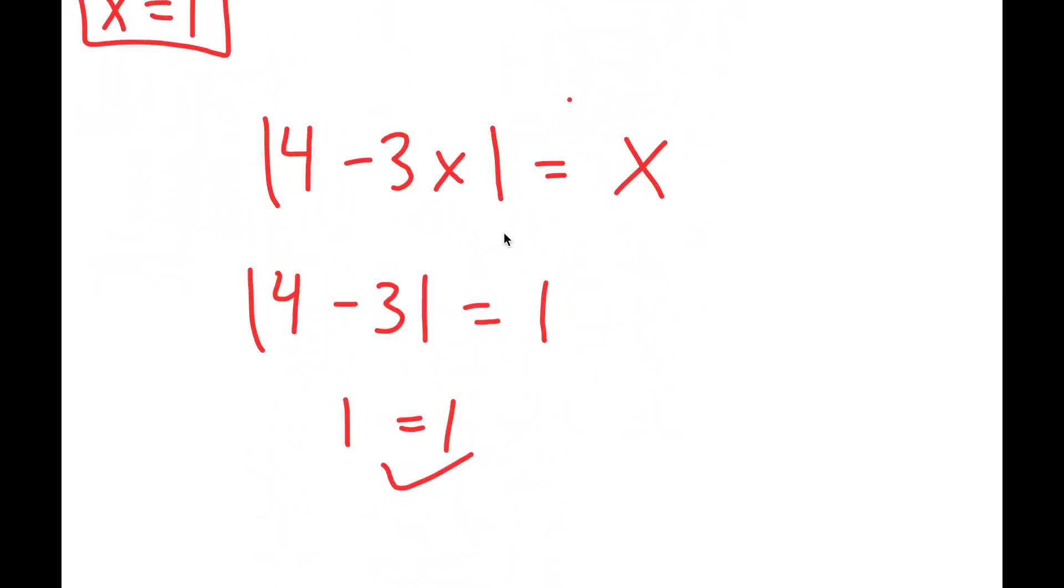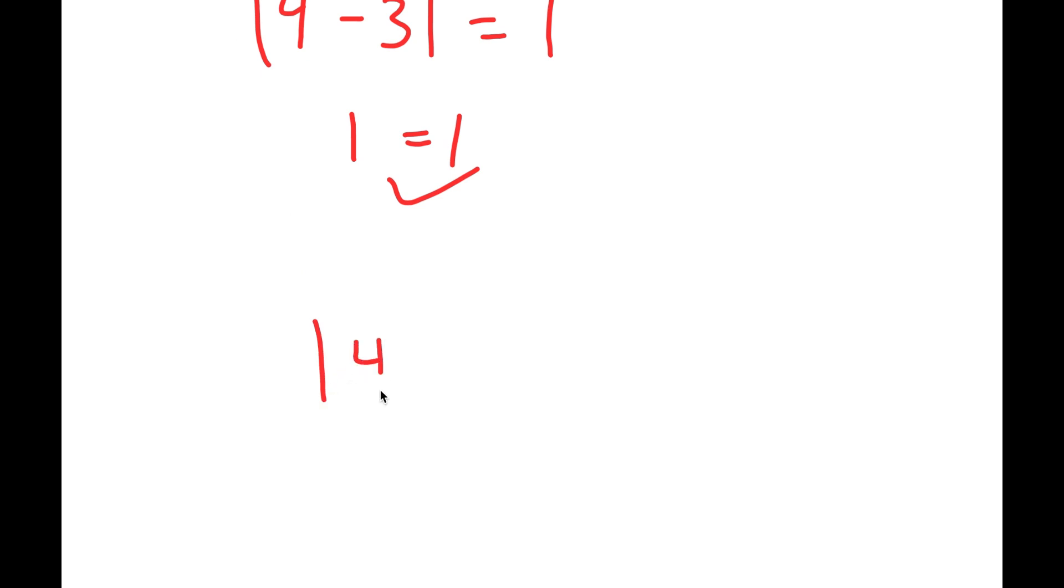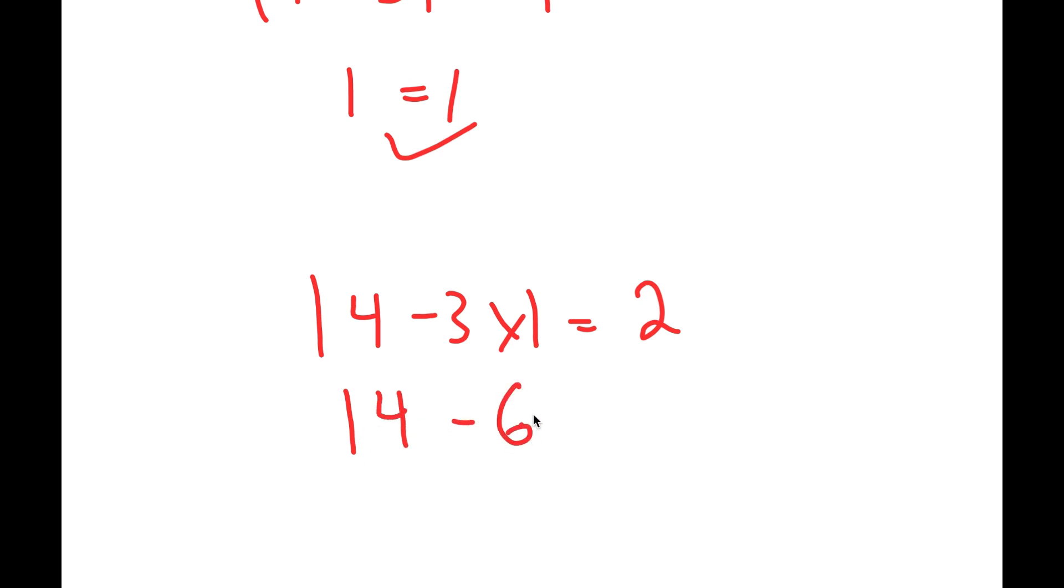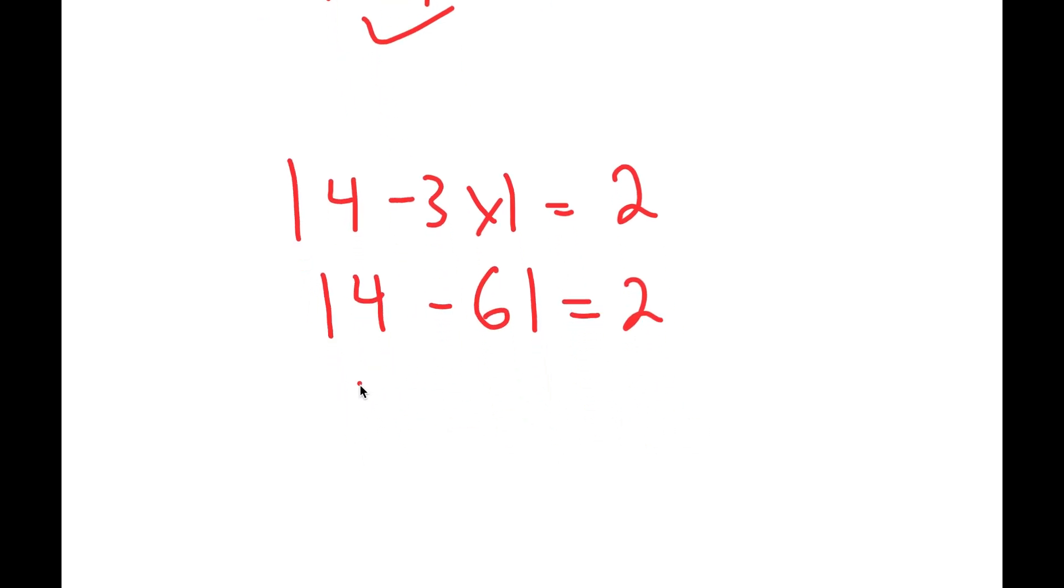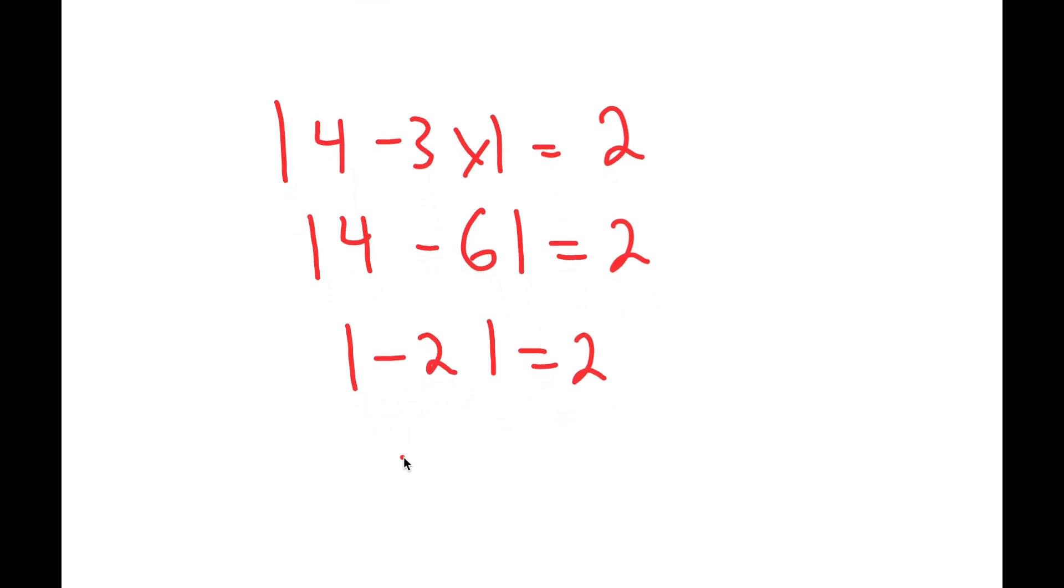And now if x equals 2, I get 4 minus 3x—the absolute value of this equals 2. x is 2, so I get 4 minus 3 times 2, which is 6, equals 2. I get the absolute value of negative 2 equals 2, and the absolute value of negative 2 is 2, so I get 2 equals 2.